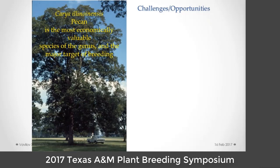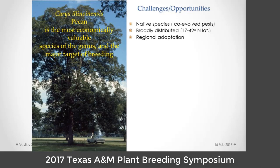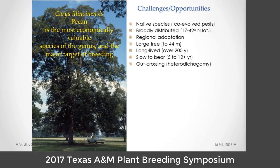Pecan is our target for breeding. It's the most economically valuable member of the genus and what we've been working with for a long time. One of its traits is it makes a big tree — up to 44 meters. It's a native species, so it has co-evolved pests. It's broadly distributed and has regional adaptations. It's long-lived over 200 years, slow to bear — 12 years is common — outcrossing, wind-pollinated, and has inbreeding depression. Graft propagation only began in 1846, so there are trees in the forest that are older than the industry.